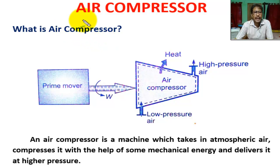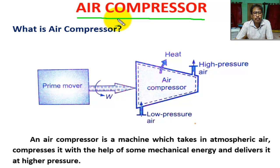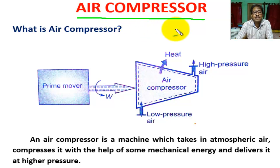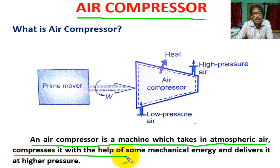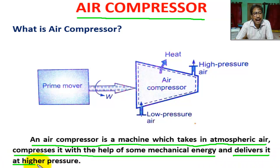Hello, students. Today we are going to learn what is an air compressor and uses of compressed air. Air compressor is also called an air pump. The function of an air compressor: an air compressor is a machine which takes in atmospheric air, compresses it with the help of some mechanical energy, and delivers it at higher pressure.